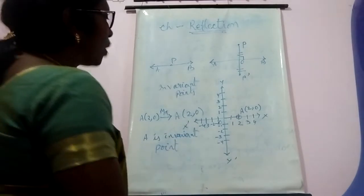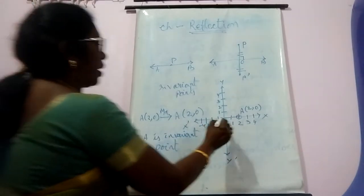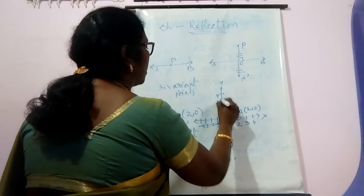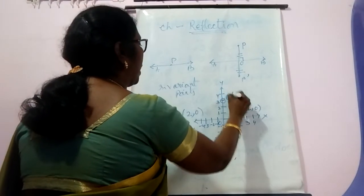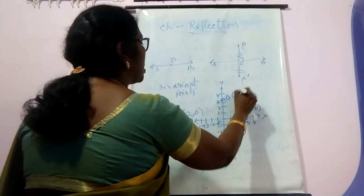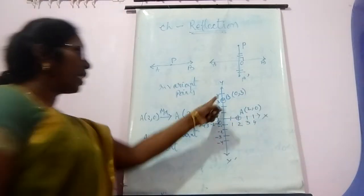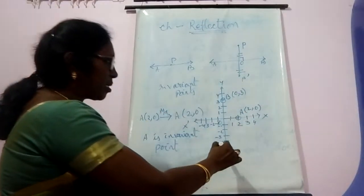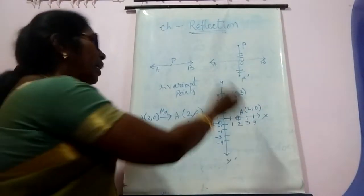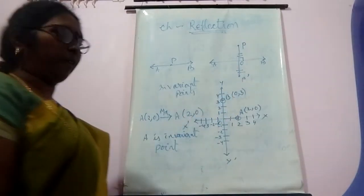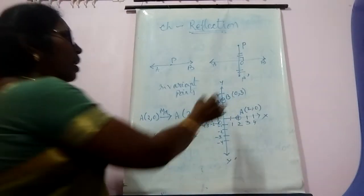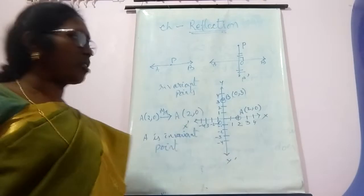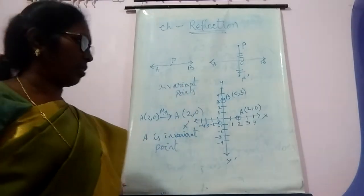Let me plot another point B(0, 3). When this point B reflects through the y-axis, its image is also B. So B is said to be an invariant point with respect to the y-axis.